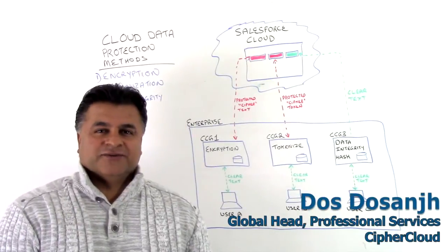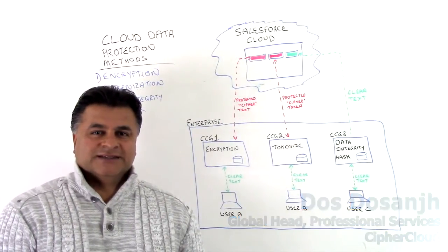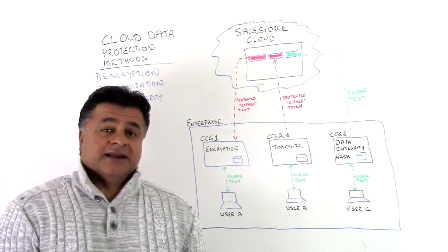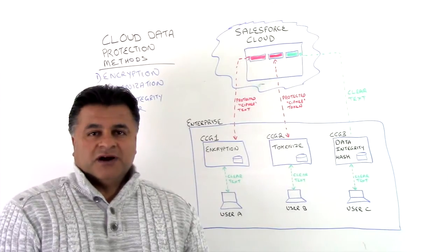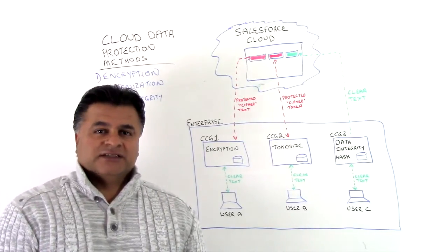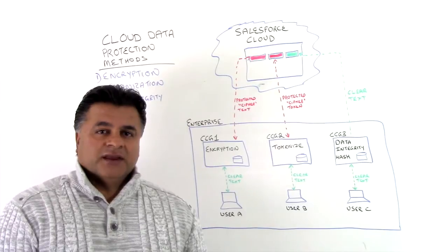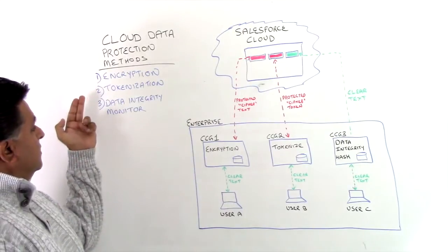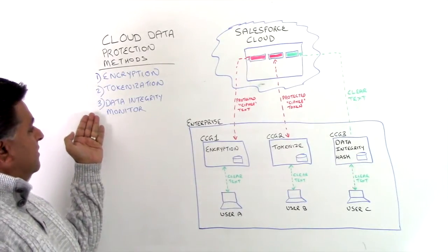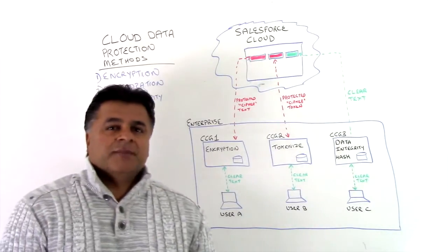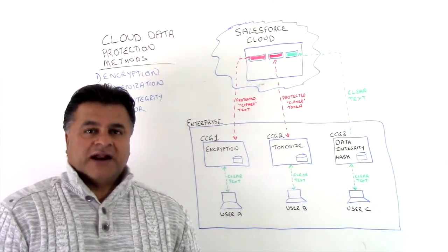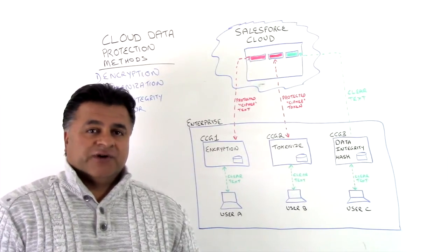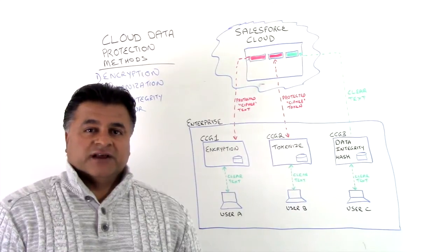Hello, this is Dostosan with Cypher Cloud Professional Services and I'm delighted to bring you another session of our Friday Chalk Talk. Today we're going to be focusing on three of our data protection methods which we utilize for our customers around the globe. Those three protection methods are encryption, tokenization, and data integrity monitor. We use a combination of these to ensure that our clients meet their security requirements as they move their information into the cloud.